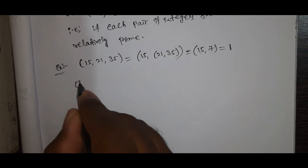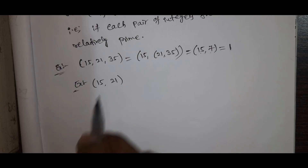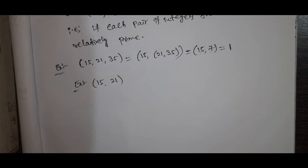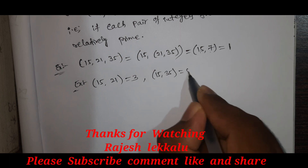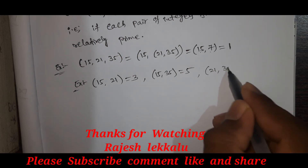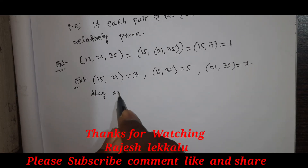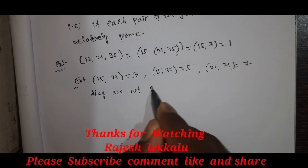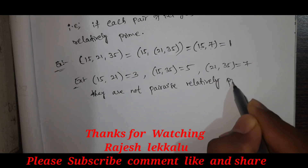Now we do the examples. For GCD(15, 21), we have GCD = 3. For GCD(15, 35), we have GCD = 5. For GCD(21, 35), we have GCD = 7. So they are not pairwise relatively prime.